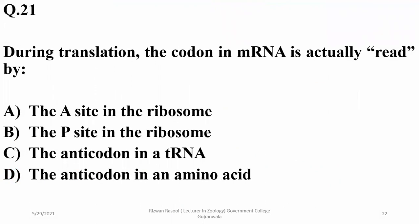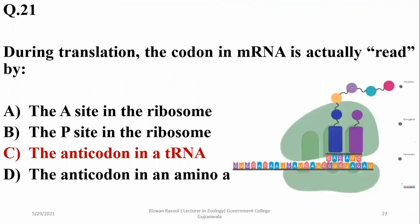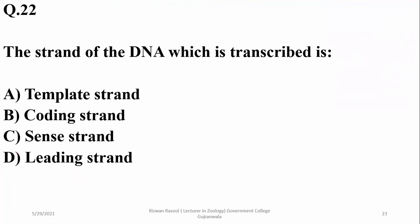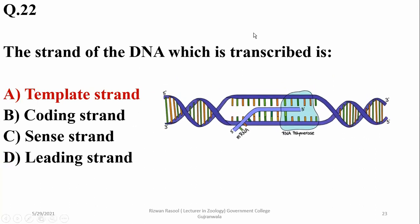During translation, the codon on messenger RNA is actually read by transfer RNA, because tRNA binds with the complementary sequence on messenger RNA. Number 22: the strand of DNA which is transcribed is the template strand; the other strand is known as the coding or sense strand. RNA is synthesized on the template strand, and that strand is also being transcribed — so alpha.